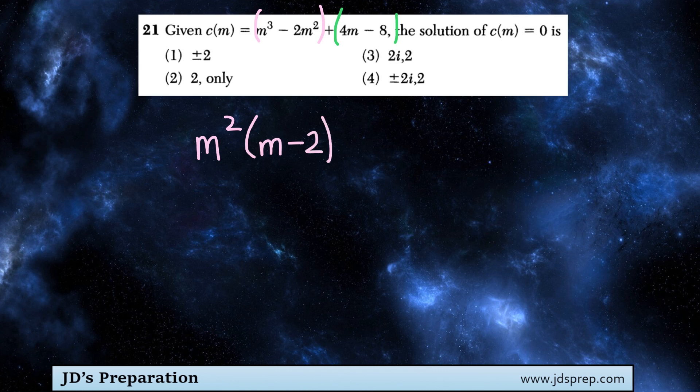And then for 4m minus 8, we can factor out a common factor of 4, and we'd be left with m minus 2.